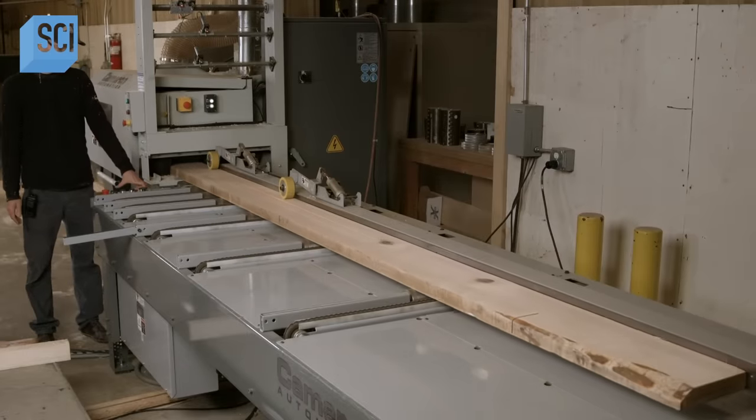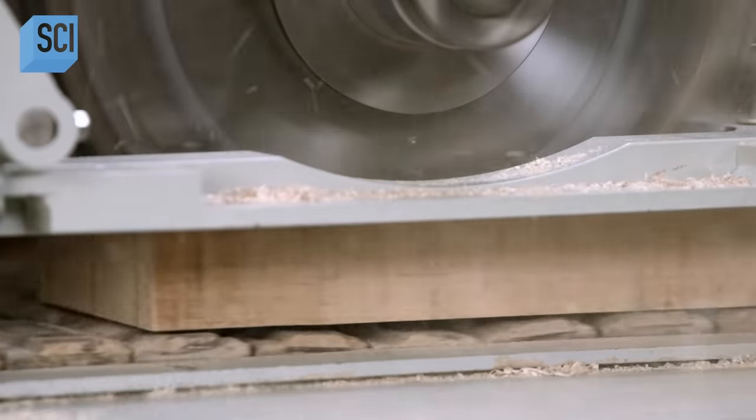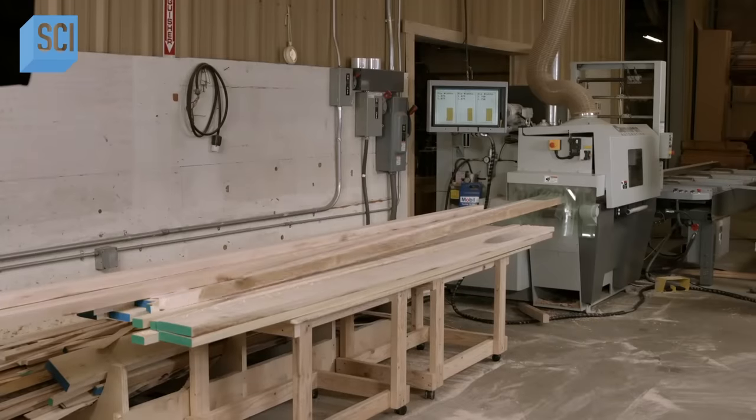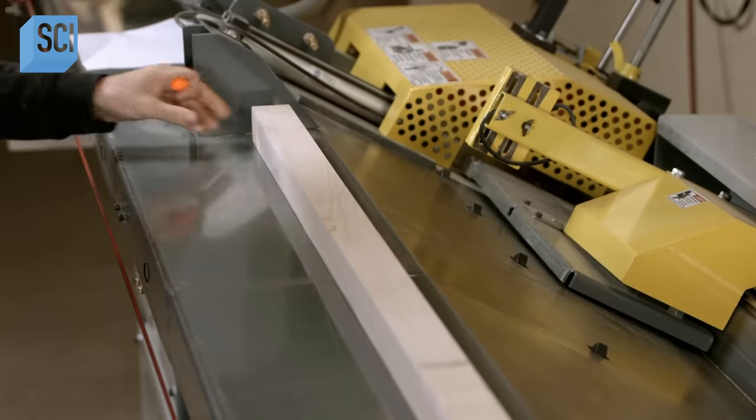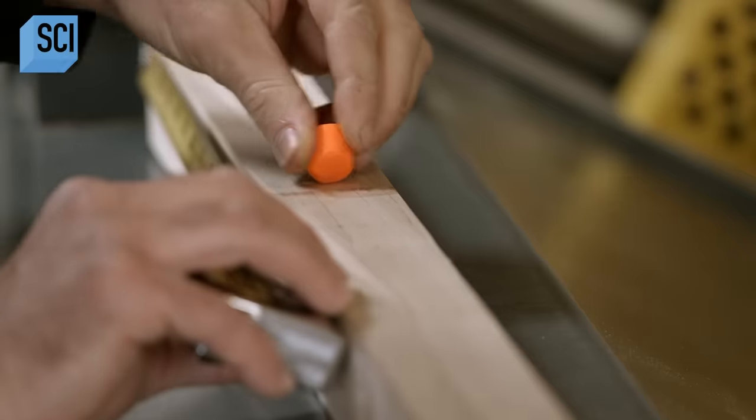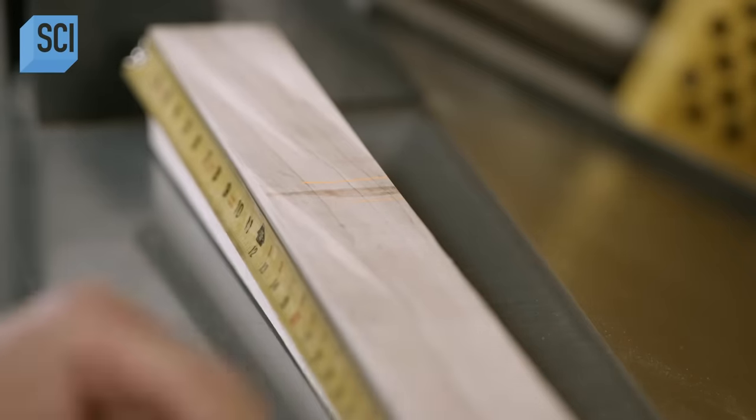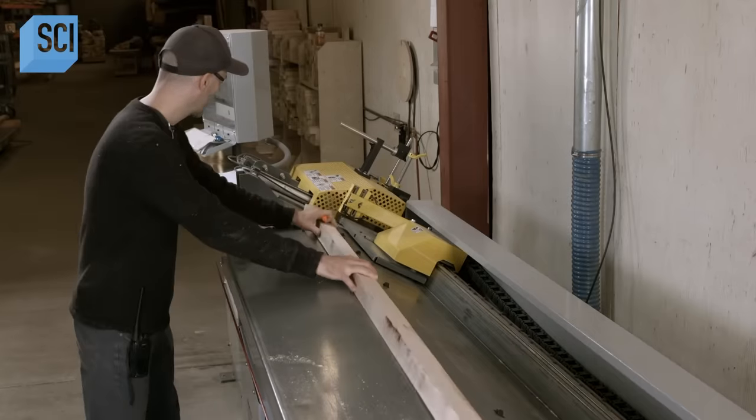A saw carves kiln-dried maple boards into thick strips, helped by a laser scanner so the saw can make clean and judicious cuts. An equipment operator scrutinizes the strips for knots and other defects, and marks them with orange chalk.